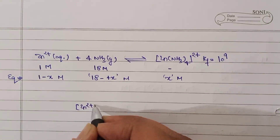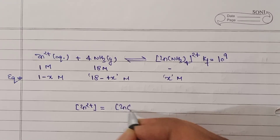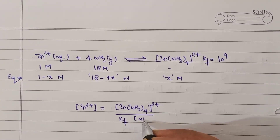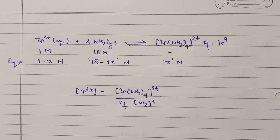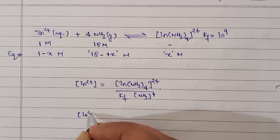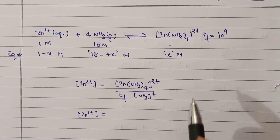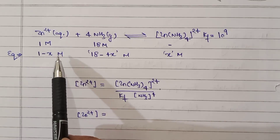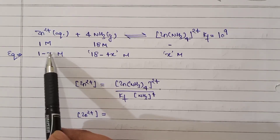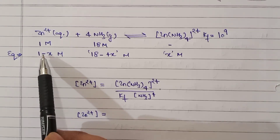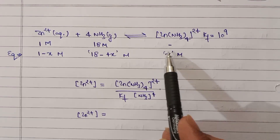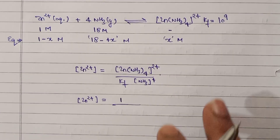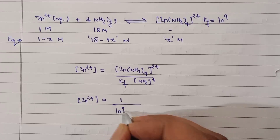Because Kf is very large, Zn²⁺ is nearly completely consumed, meaning X ≈ 1. So the concentration of the complex Zn(NH₃)₄²⁺ is approximately 1 molar, and Kf = 10⁹. The concentration of Zn²⁺ at equilibrium is: [Zn(NH₃)₄²⁺] / (Kf × [NH₃]⁴). But we also need to consider the copper equilibrium simultaneously, since both are present in the same solution and share the same ammonia.